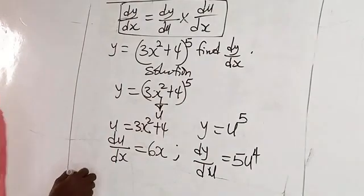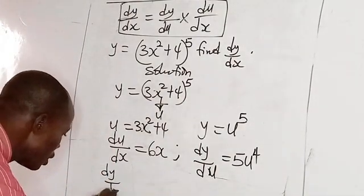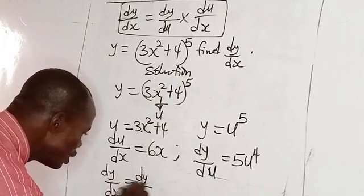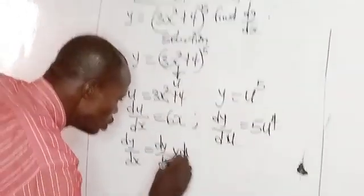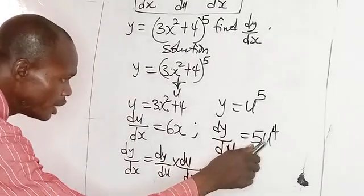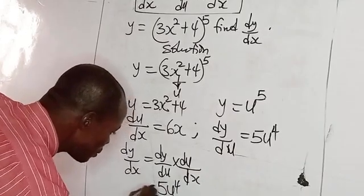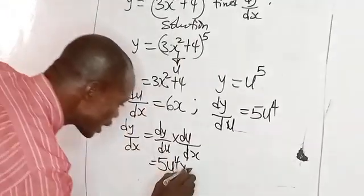And the formula is dy/dx equals dy/du times du/dx. dy/du is 5u⁴, so you have 5u⁴ times du/dx, which is 6x.